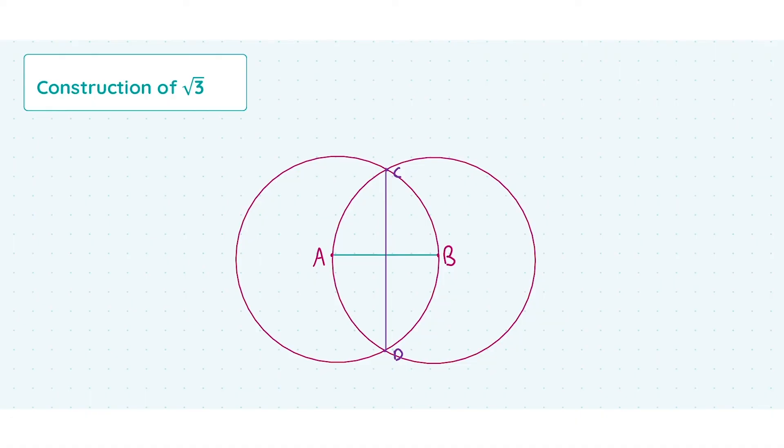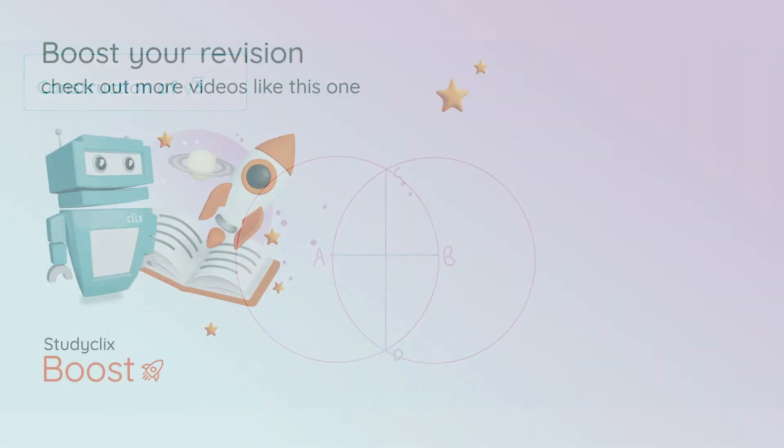So there we have it, that purple line from C to D measures exactly the square root of 3 units. That's how to draw a line that measures the square root of 3 units. I hope my video helped, and that's the end of this construction and the end of the video. Thank you very much for watching, and hopefully I'll see you all again soon.